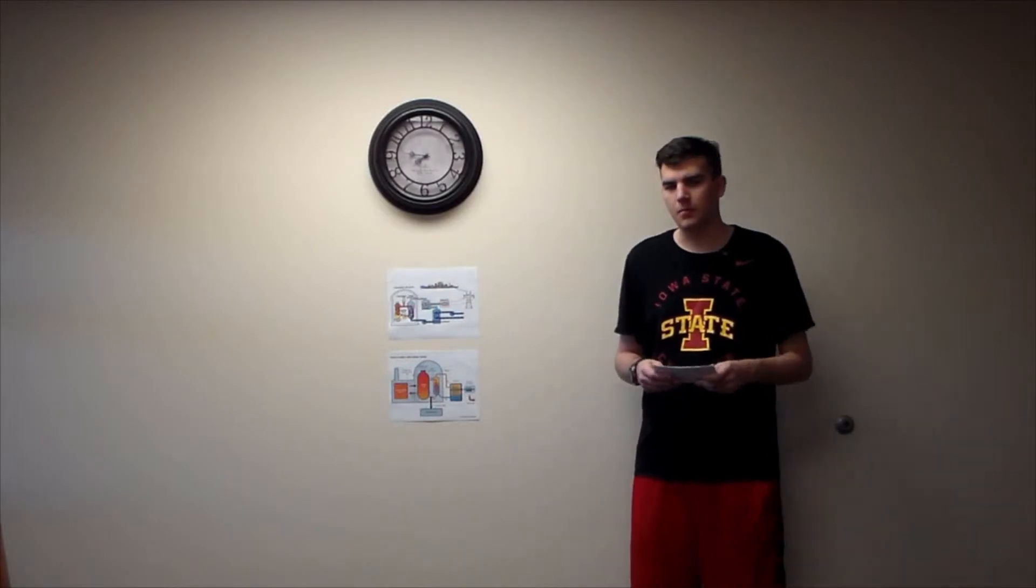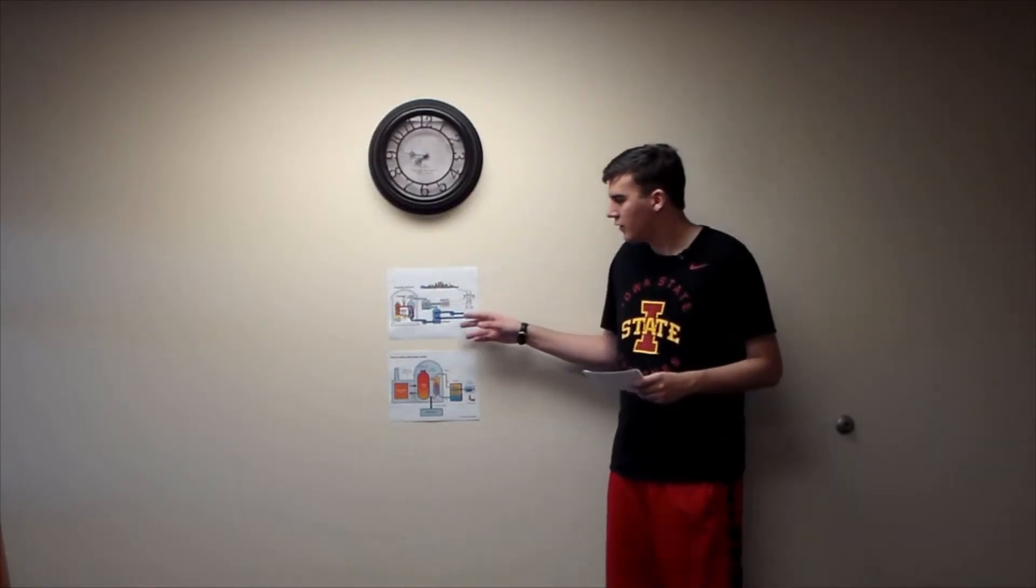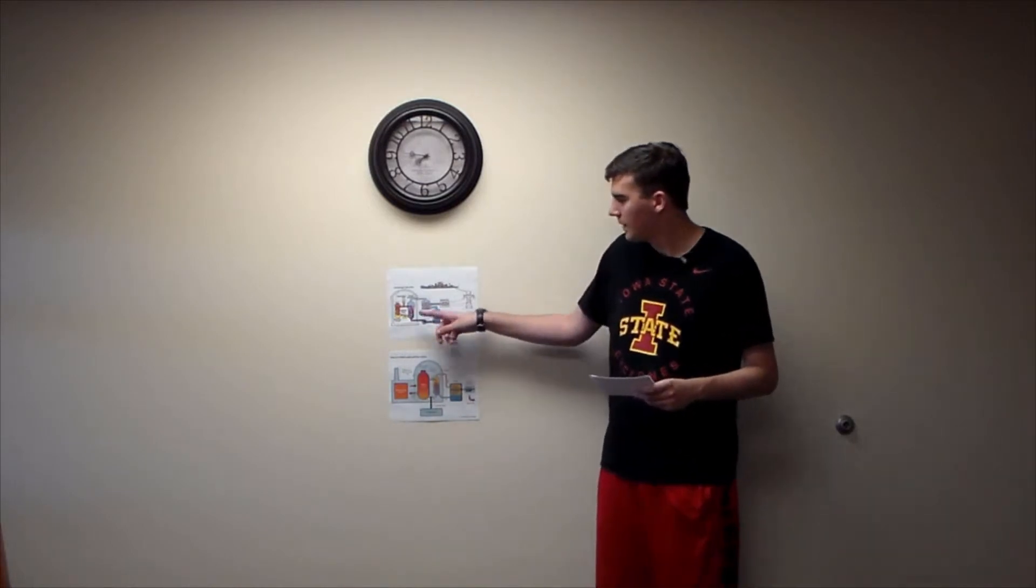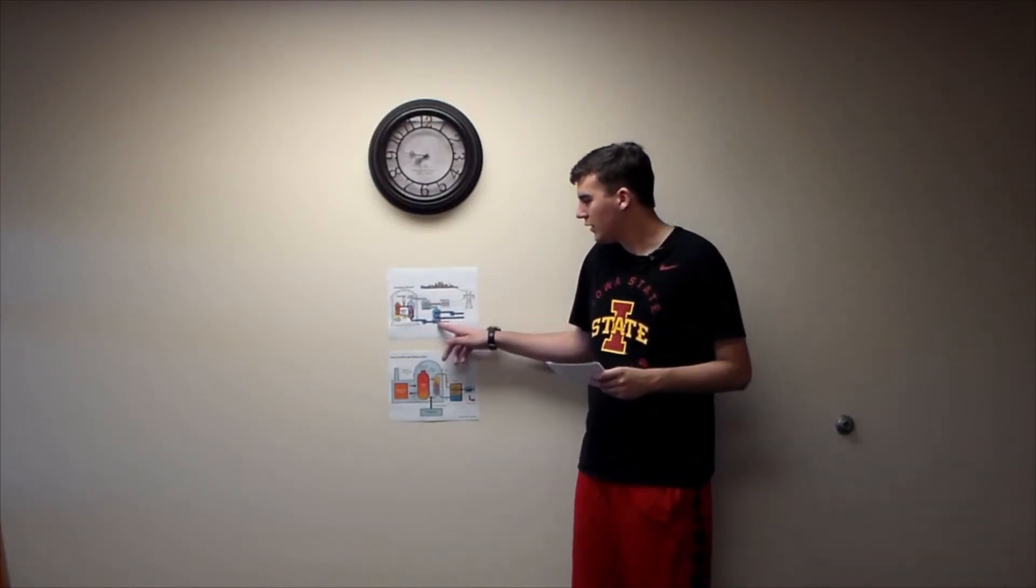The LWR is the most widely used nuclear reactor design in the world, with the majority of early US nuclear reactor designs being of this type. This design consists of a reactor vessel, a steam generator, a turbine and generator combo, and a condenser.